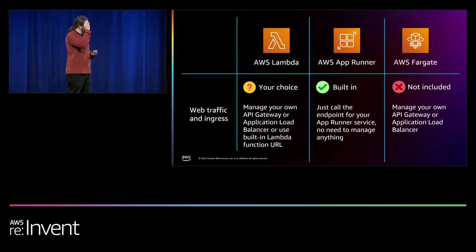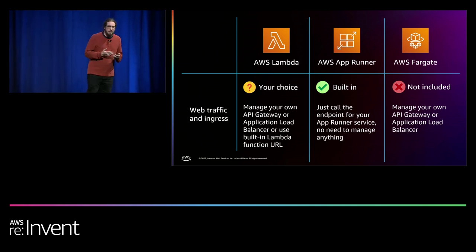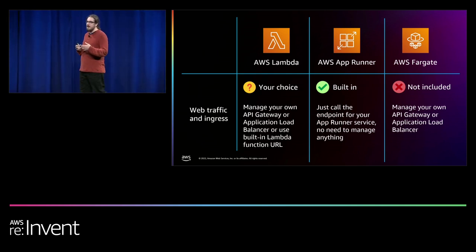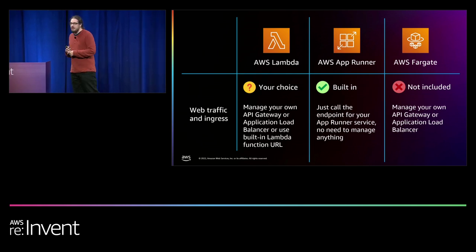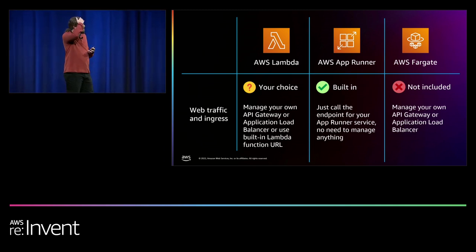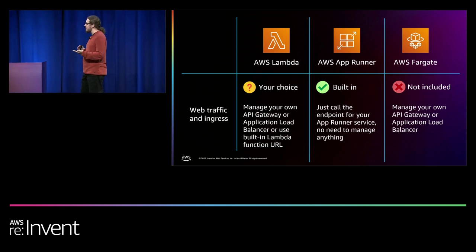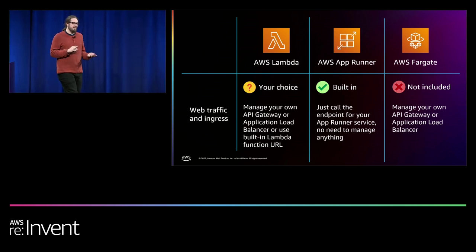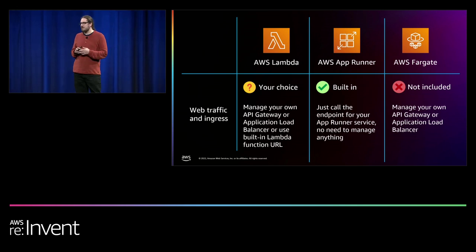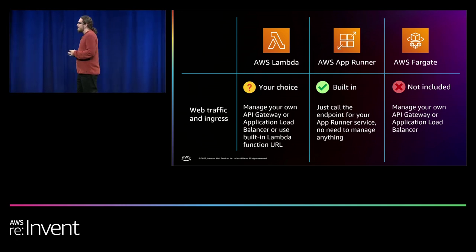On web traffic and ingress: AWS Lambda offers a built-in function URL at no additional cost, API Gateway as a serverless pay-per-request option, or an Application Load Balancer with its constant hourly charge. With AWS AppRunner, all ingress is built in — the Envoy Proxy load balancer is managed behind the scenes at no additional cost. With AWS Fargate, there's no included ingress option; you must provide your own — API Gateway for a serverless pay-per-request model at lower traffic, or Application Load Balancer for high-volume concurrent traffic.